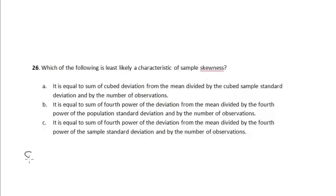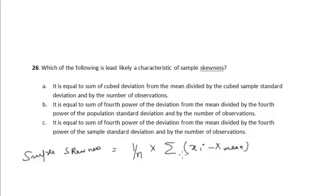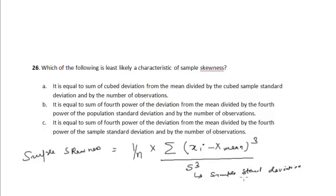Sample skewness is equal to 1/n, where n is the number of observations, into the summation of (xi minus x-mean), that is individual values minus their mean values, raised to the power of 3, divided by s-cubed, where s is the sample standard deviation. So sample skewness represents the third-degree distribution around the mean for a sample data.